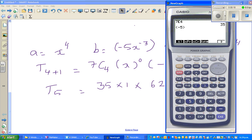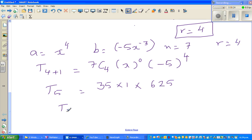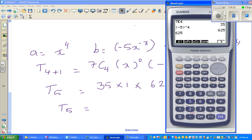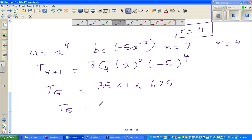So your constant term, or your 5th term, is your constant term without any x's. So this is nothing but 625 times 35. So 625 times 35 gives you the constant term, which is 21875. So 21875 is your constant.